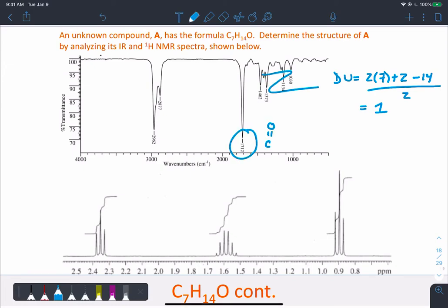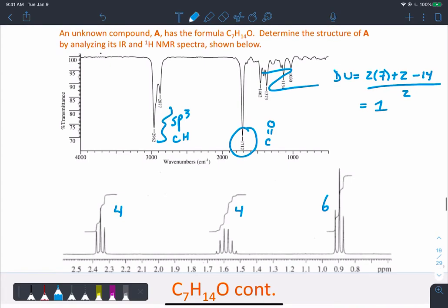Ignore the fingerprint region. These are just the SP3 hybridized CHs. We see them in just about every spectrum. Okay, 14 protons, so it looks like we've got 4, 4, and 6 perhaps. That would be 14. Remember there's a video on how to calculate the integrals, the area under those peaks, and how to translate that to number of protons.